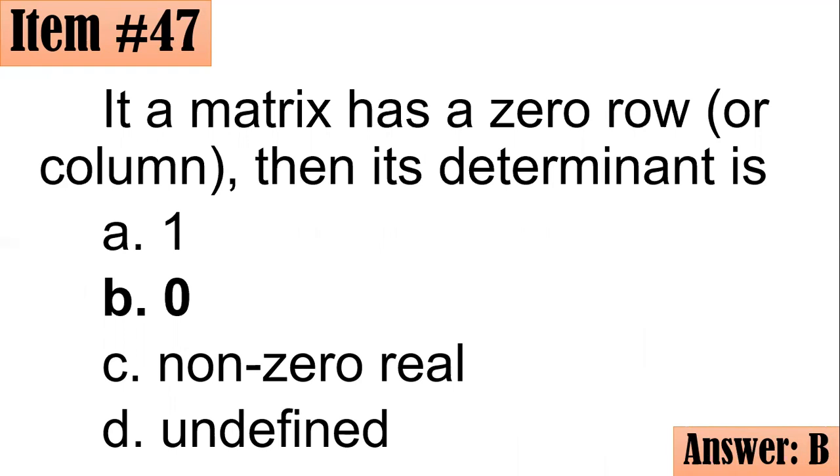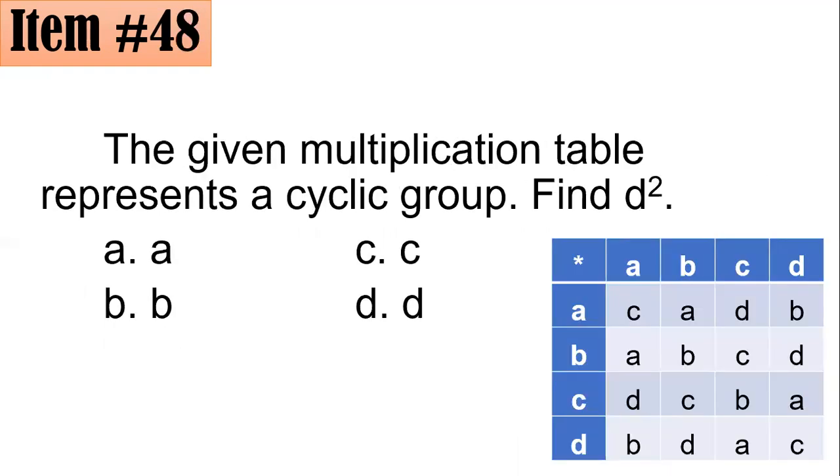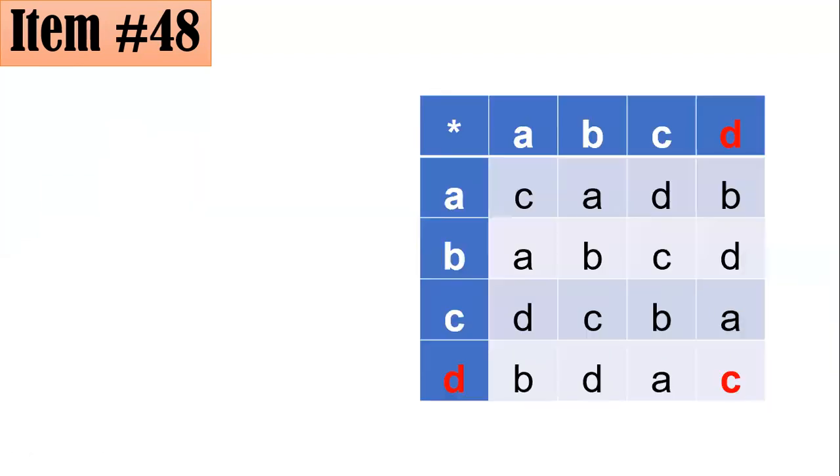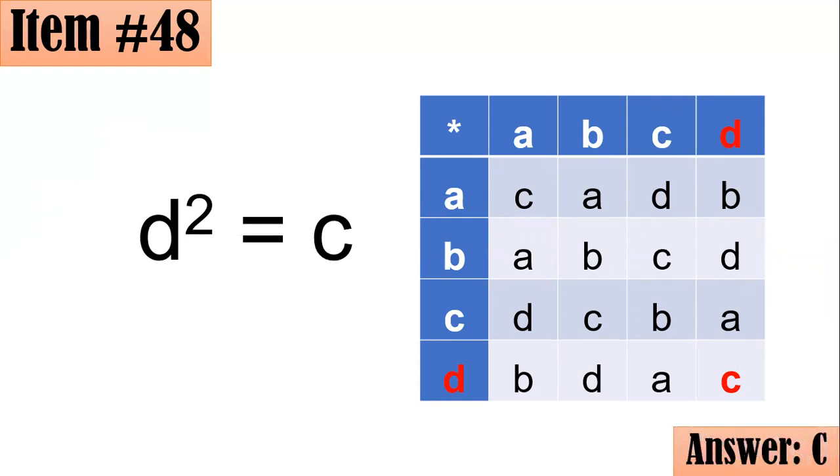Item 48. The given cyclic multiplication table represents a cyclic group. Find D squared. To look for D squared, remember that D squared means D times D. If you could see here, this is the D and this is the other D. If you draw horizontal here, draw something vertical here, you could actually see that this C is their intersection. This means that D star D or D squared is C. Letter C is the correct answer.